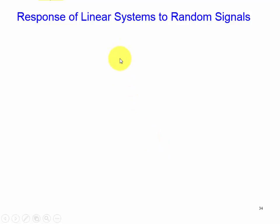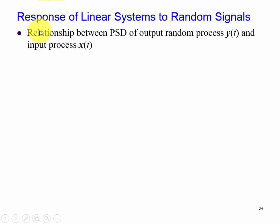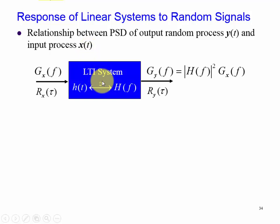First of all, we recall from Chapter 6 that the relationship between the power spectral density of our output process with respect to the input process is governed by this block diagram. Here we have our power spectral density, a PSD of our input. We have some type of linear time invariant system and we have our power spectral density of the output.